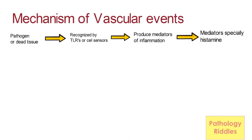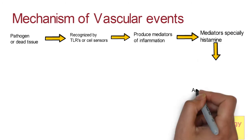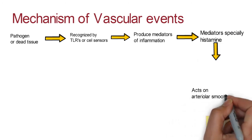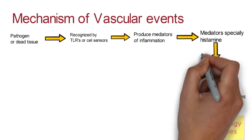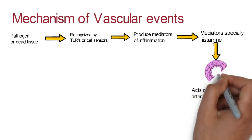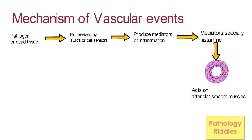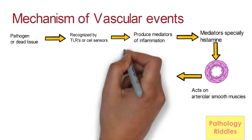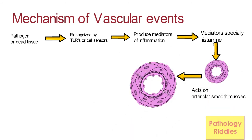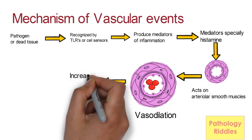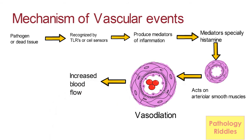One of the main mediators is histamine, which acts on arteriolar smooth muscles causing vasodilation, hence increased blood flow. This results in Rubor and Calor — redness and heat.